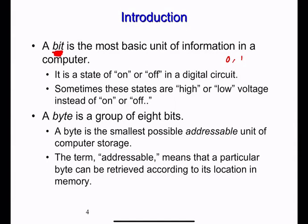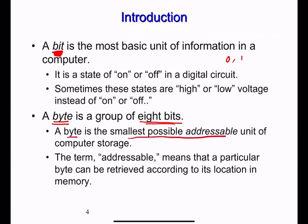So bits can be zero or one, and that's how the computer interprets information. Another important term is the byte: a byte is a group of eight bits. When eight bits are collected together, that is called a byte. A byte is also the smallest possible addressable unit of computer storage.